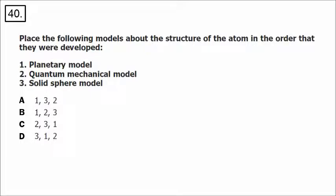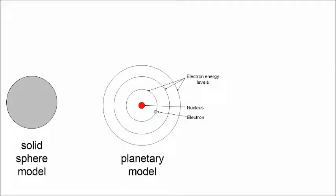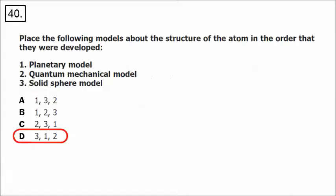In number 40, we have three different models of the atom to place in order. The most primitive is the solid sphere model — the atom is just a solid sphere like a marble, with no information about protons, electrons, or neutrons. Next comes the planetary model, where electrons orbit the nucleus like planets revolving around the sun in different energy levels. The most sophisticated is the quantum mechanical model, where electrons occupy orbitals — regions in space with a probability of finding an electron. So solid sphere came first, quantum mechanical came last. The correct answer is D.